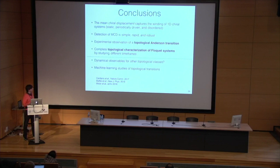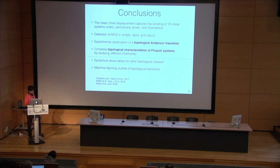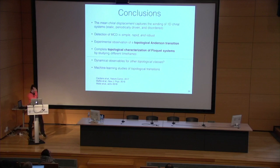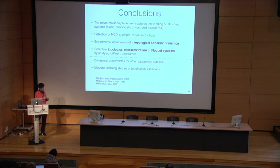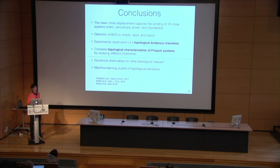In conclusion, the mean chiral displacement is an efficient way of capturing the winding of one-dimensional chiral systems — it works for static, periodically driven, and disordered systems, and provides a simple, rapid, and robust detection. This helped us to detect the topological Anderson transition and to characterize periodically driven systems. Open questions include whether this dynamical observation can be extended to other topological classes, and whether machine learning can help in detecting topological transitions — there were some results and a poster on that, and I'd be very interested if anybody has clues. Thank you for your attention.